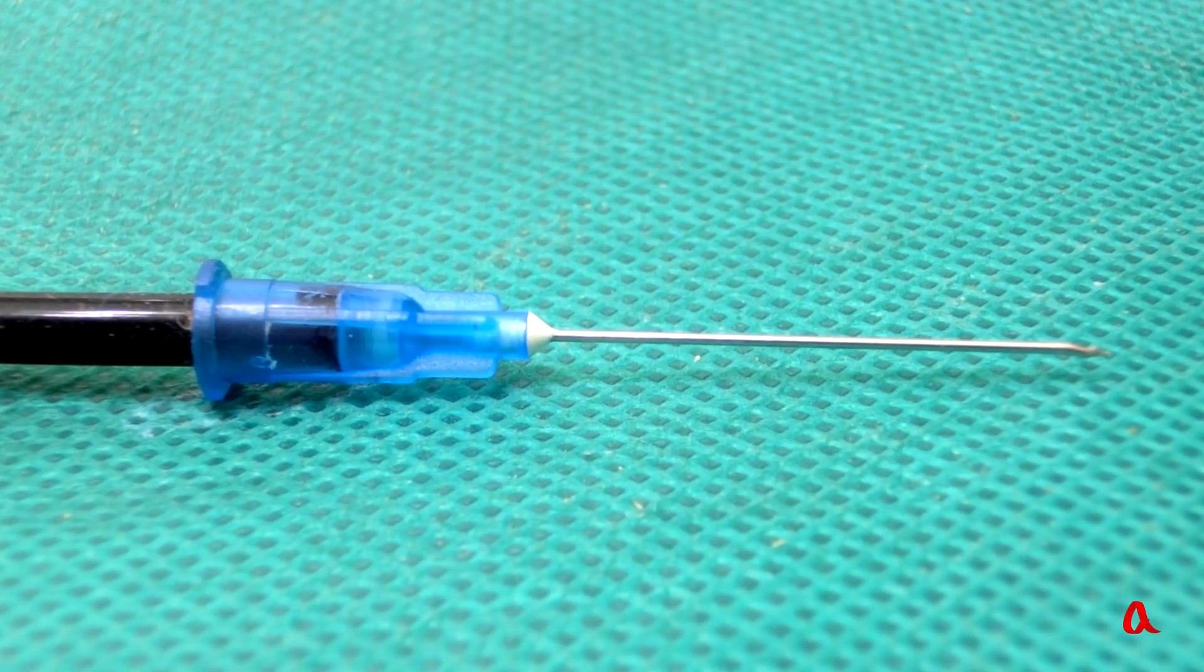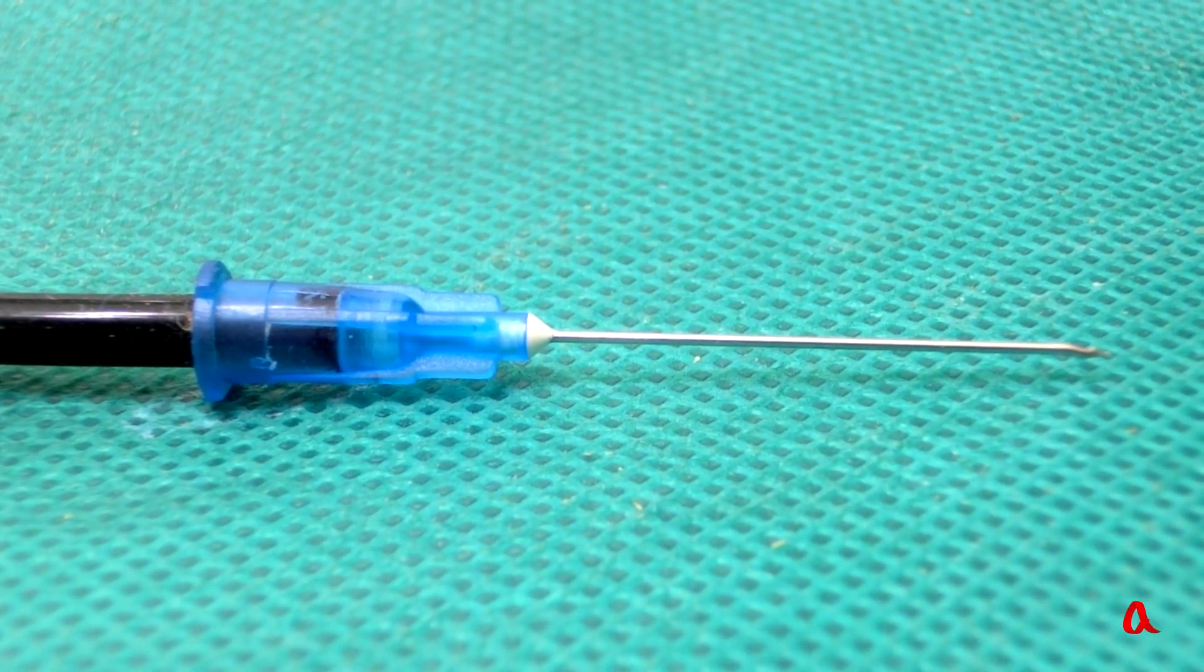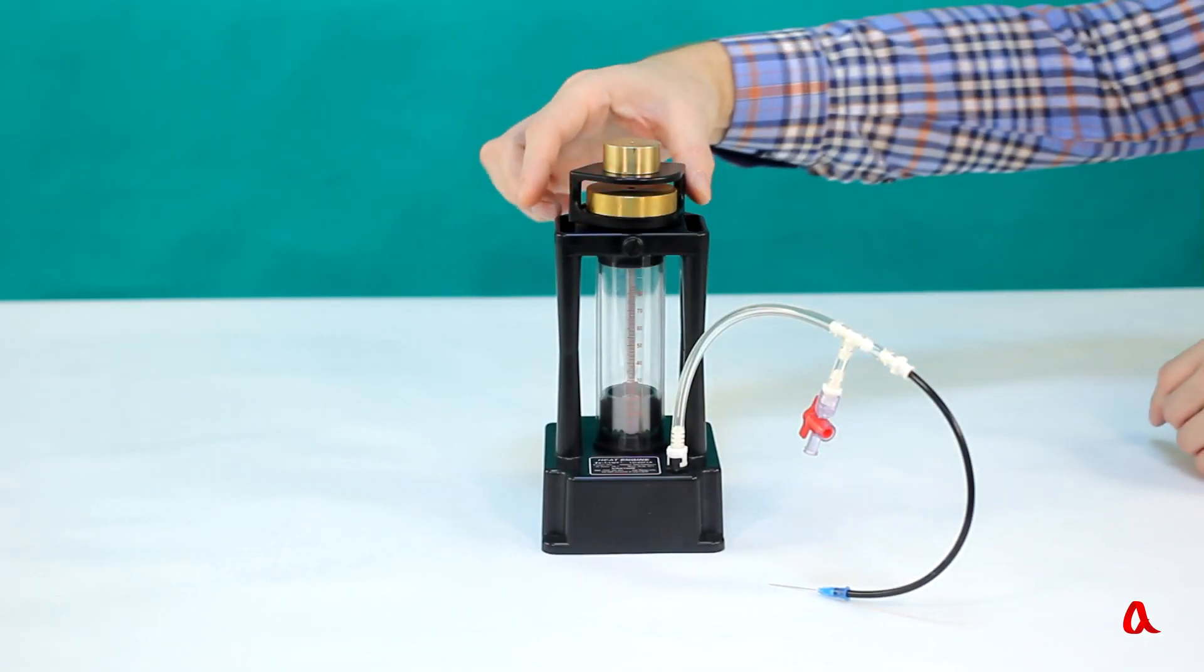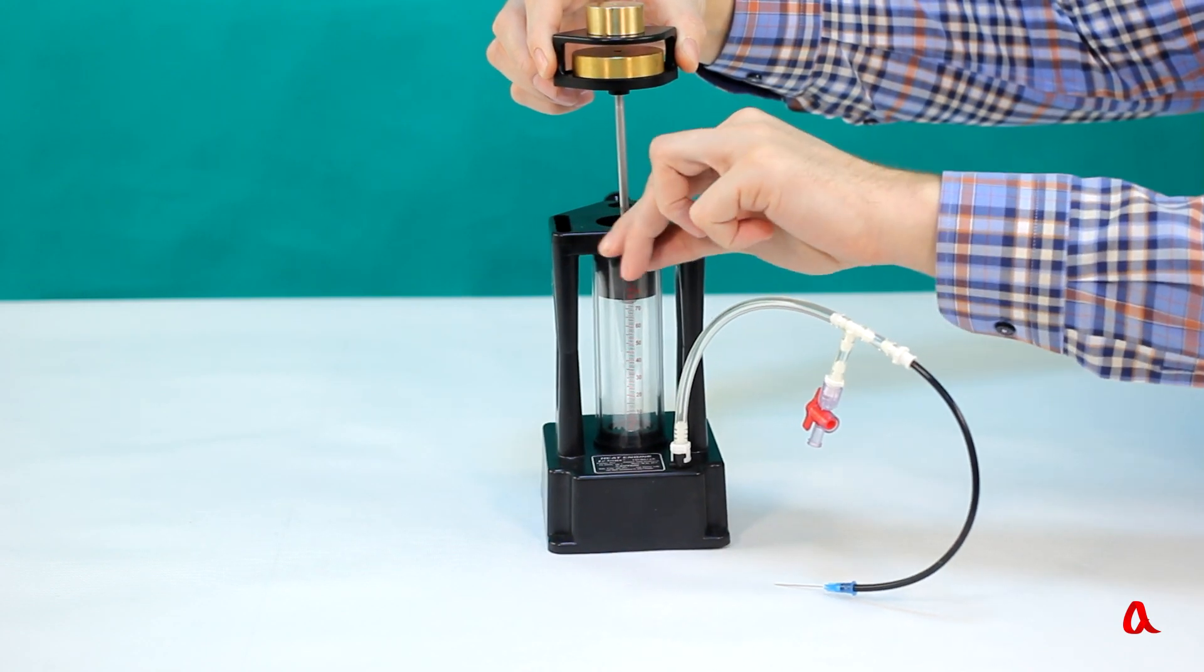To see how this happens, we take a thin and long syringe needle and push air through it instead of water. Put additional loads on the piston, draw some air into the cylinder and close the tap.